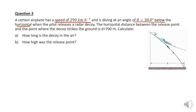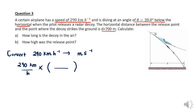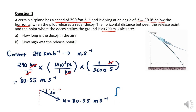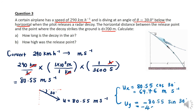Now the final question: an airplane has a speed of 290 kilometers per hour diving at 30 degrees below the horizontal. The distance from the release point to the ground is 700 meters. We first convert 290 km/h to meters per second, obtaining an initial velocity of 80.55 meters per second. Resolving into components: ux equals 69.76 m/s and uy equals negative 40.2 m/s, since it is directed downward.